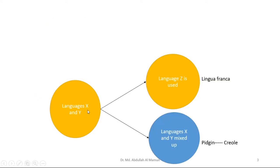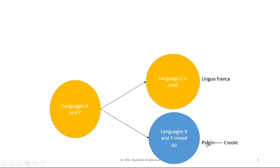Say two persons have two different languages, language X and language Y. For communication, they can use language Z, which is a common language to both of them. Or they can mix up elements from both languages and use that for communication. If they use a third or common language which they share, it's called Lingua Franca. The mixed-up language is called a Pidgin or a Creole.